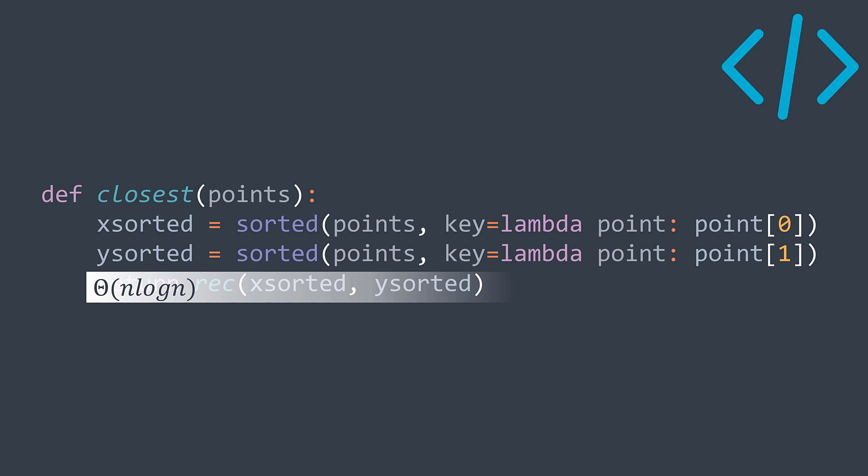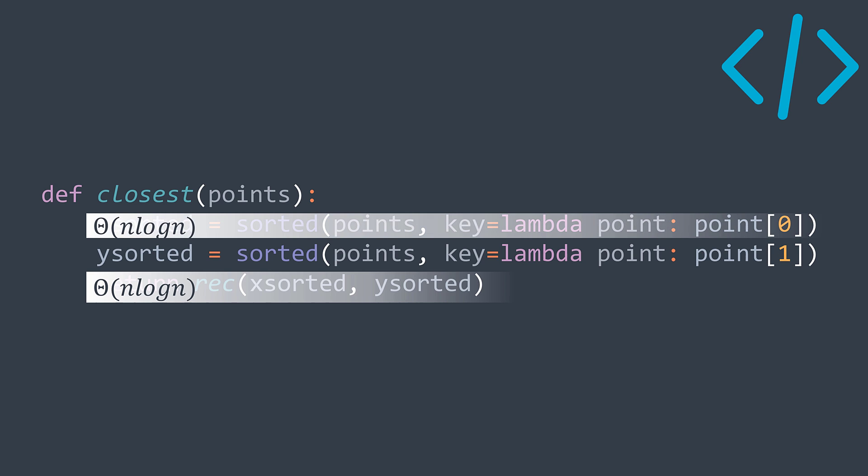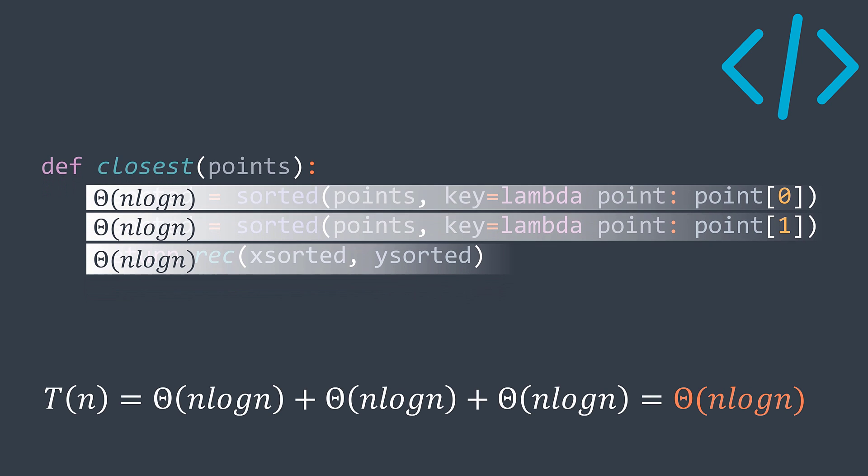Adding the Θ(n log n) cost of sorting by X and Θ(n log n) for sorting by Y, the total is 3·Θ(n log n) = Θ(n log n). This divide and conquer solution has Θ(n log n) time complexity — much better than the brute force O(n²). Thanks for watching; subscribe to the channel and see you in the next one.